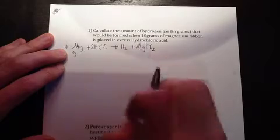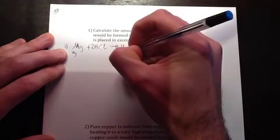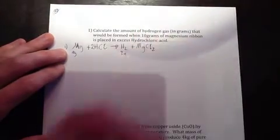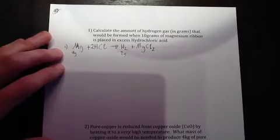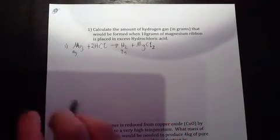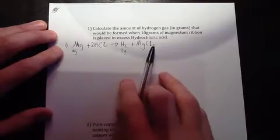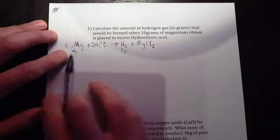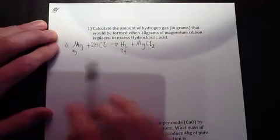10 grams of magnesium ribbon, and I put a question mark next to the stuff that I want to know. I want to know the amount of hydrogen gas, so I'm going to put a question mark here underneath hydrogen gas of what I want to know. And that's in grams as well, so unknown grams. So now we have this, our first step is done.